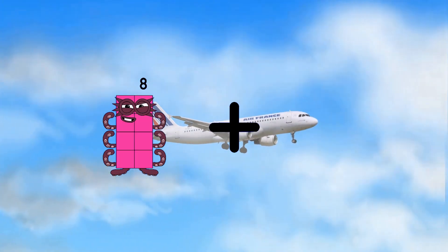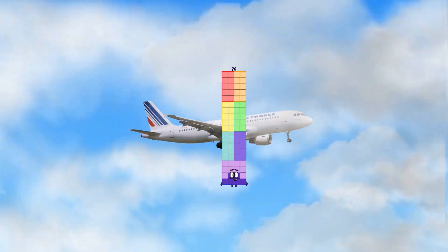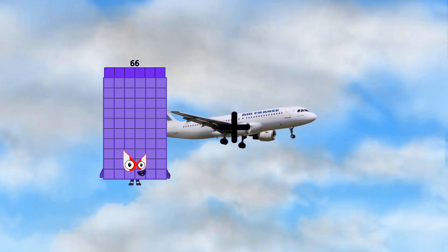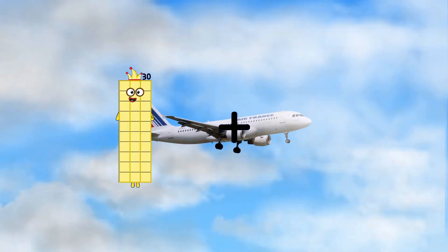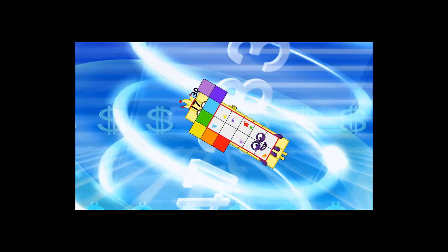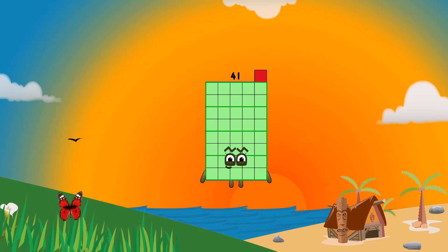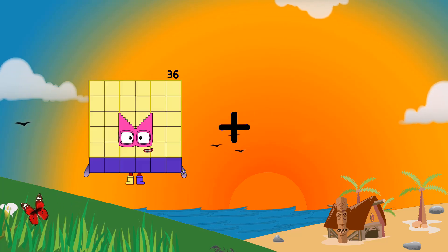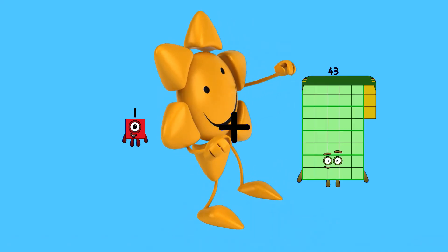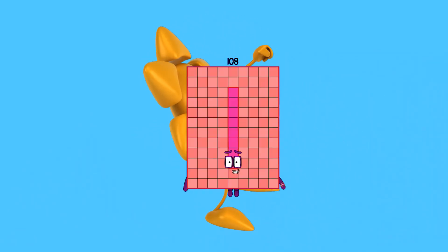8 plus 68 equals 76, 30 plus 17 equals 47, 16 plus 25 equals 41, 1 plus 107 equals 108.